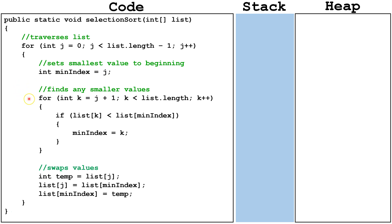This internal loop will look for smaller values in the unsorted portion, and then if it finds a smaller value, it will set min index equal to that index. After we've found the smallest value in the unsorted portion of the list, we will use these three lines of code to swap out the values in the first index in the unsorted portion and the index in min index. We see that the selection sort has a list parameter.